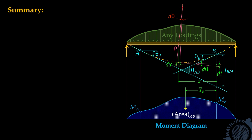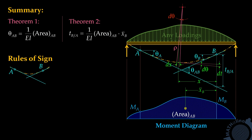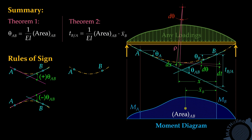This is our summary. Theorem 1: the change in slope between A and B is equal to 1 over EI times the area of the moment diagram between A and B. Theorem 2: the deviation of point B from the tangent line through A is equal to 1 over EI times the moment of area AB about point B. Also note the sign conventions: if the rotation is counterclockwise, it is positive; if clockwise, it is negative. If the point is above the tangent line, it is positive deviation; if below, it is negative deviation.